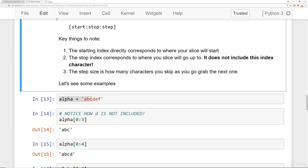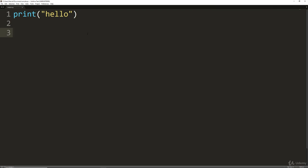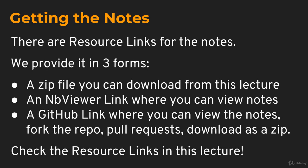Every single lecture is going to have a notebook related to it. During the course, we'll also show you how to work with text editors such as Sublime Text to create standard Python scripts. And every notebook can actually be easily saved as a .py script or many other formats, including HTML. The three forms we provide the notebooks in: a zip file that you can download straight from this lecture — you should see a little blue pop-up as you're viewing the lecture saying that there's resources available. One of them is a zip file of all the notes and files that we use during the course. Another one is an NB viewer link where you can just view the notes and download notebooks one by one. And then there's also a GitHub link where you can view the notes, fork the repo, make pull requests in case you want to add stuff. You can even download all the notes as a zip file directly from the internet in case for some reason you can't connect to Udemy.